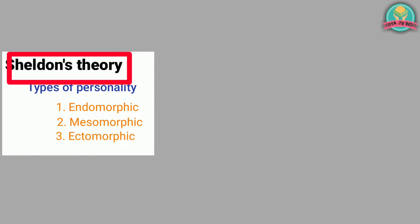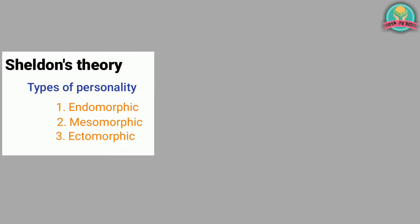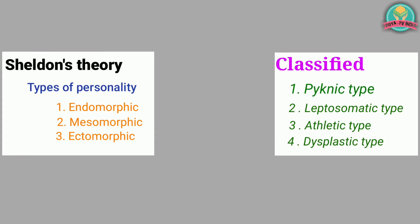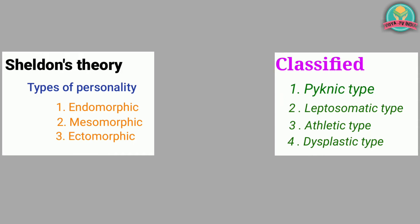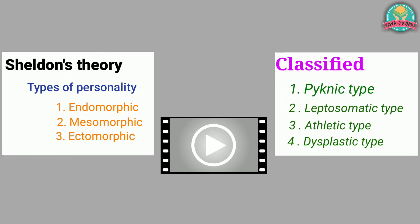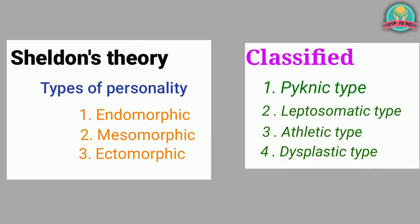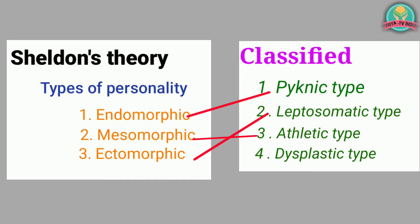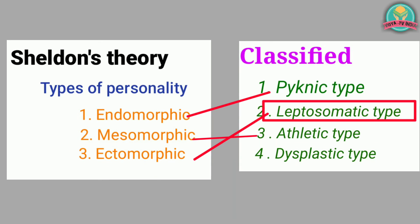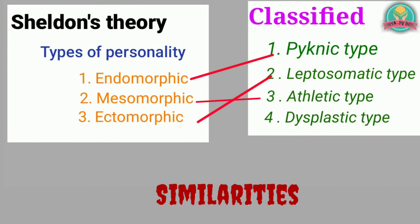We already discussed Sheldon's theory in an earlier video, where we saw that Sheldon divided personality into three types, which is also based on the physical structure of the person. Do you see any similarities between these two theories? In Sheldon's theory, what is called endomorphic is here called picnic. Similarly, what is called mesomorphic and ectomorphic in Sheldon's theory is here called athletic and leptosomatic. So we can say that there is a lot of similarity between these two theories.